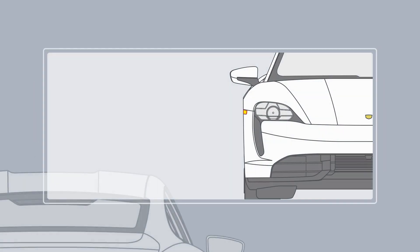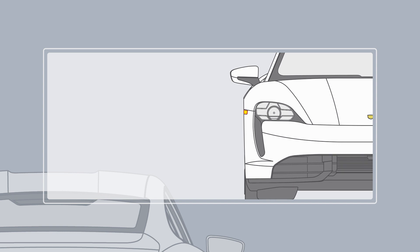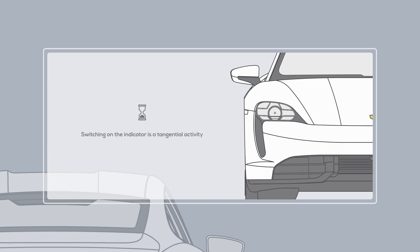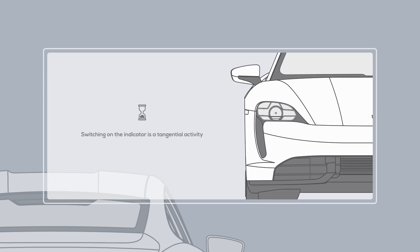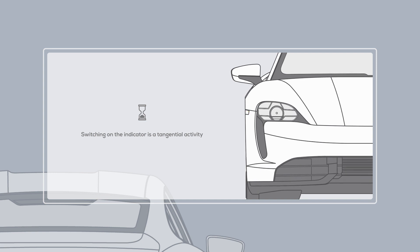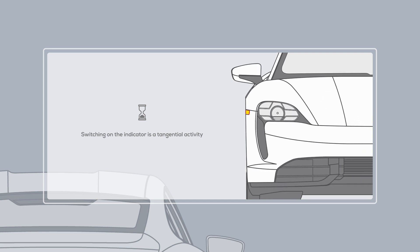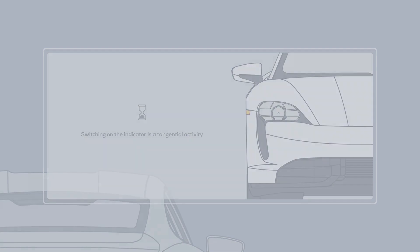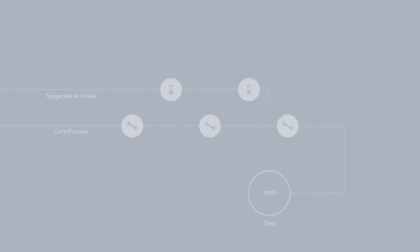This is like using your indicator light in a car. It doesn't do anything to how you drive the car — it's just a signal to other drivers that you intend to do a maneuver. But if you don't remember to do it, it doesn't switch itself on.